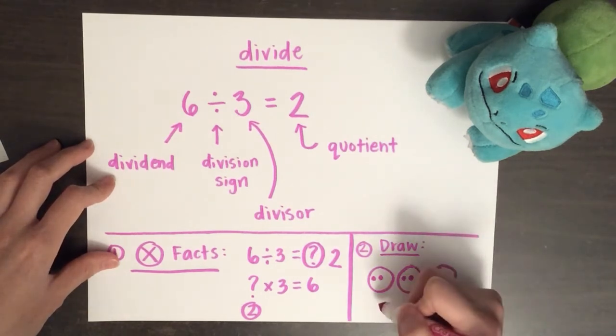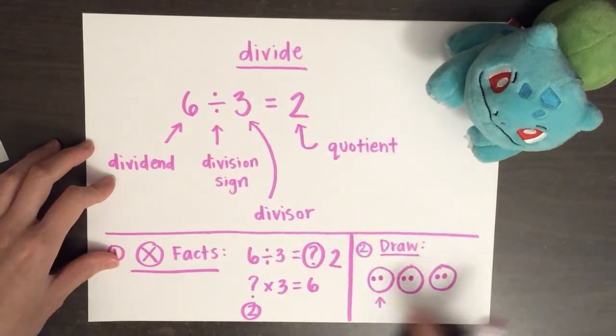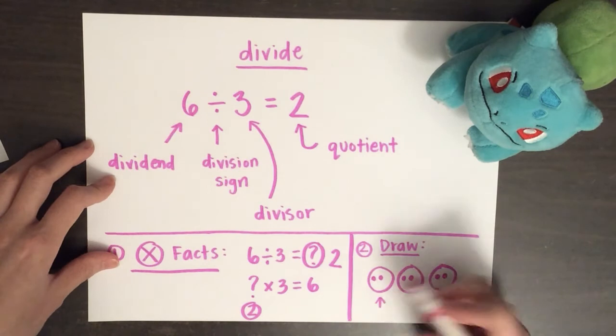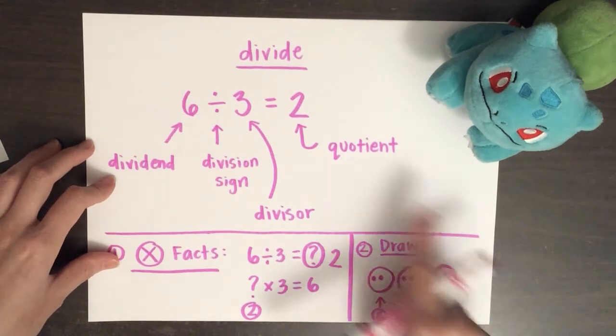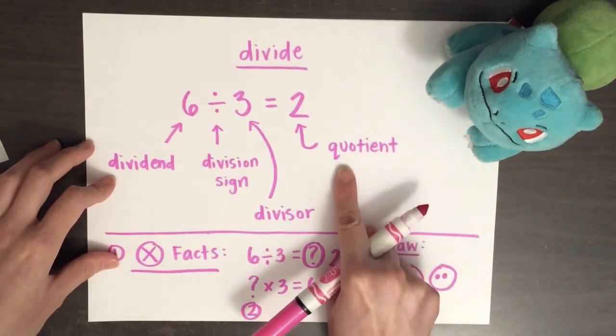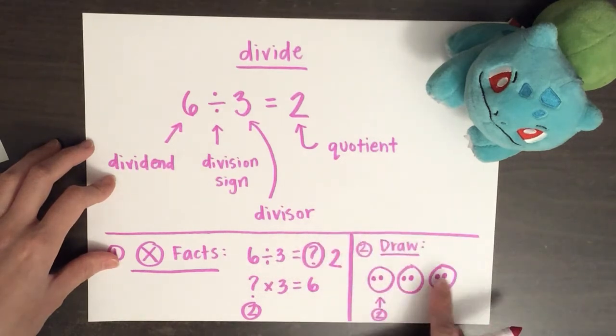And now I'm going to see how much one person has. Just one. One. Two. So I see that each friend receives two pieces of candy. Two for you. Two for you. Two for you. So it's fair. Once again, my quotient, or the number of items each group has, is two.